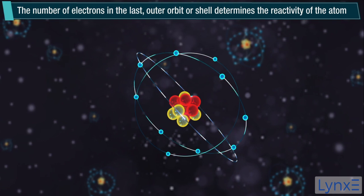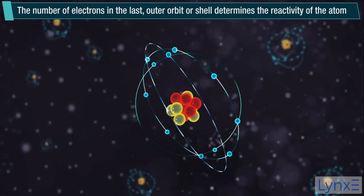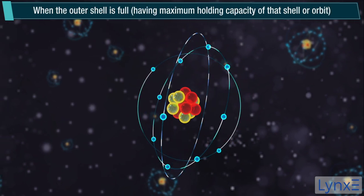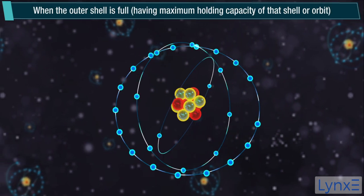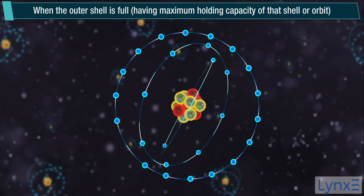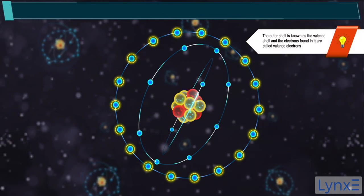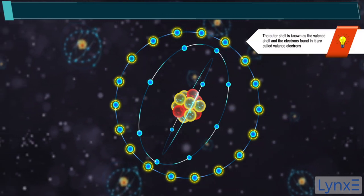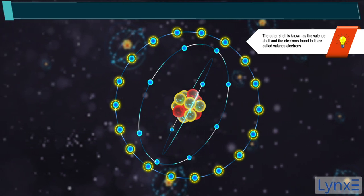The number of electrons in the last outer orbit or shell determines the reactivity of the atom. When the outer shell is full, having maximum holding capacity of that shell or orbit, the atom is stable and least reactive. Note, the outer shell is known as the valence shell, and the electrons found in it are called valence electrons.